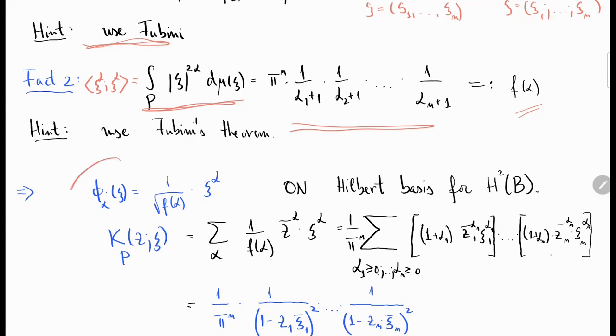From fact one and fact two you get that this class of functions, normalized monomials phi alpha, form an orthonormal Hilbert basis of H2B.